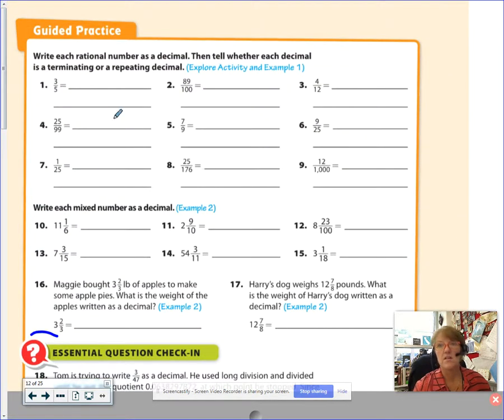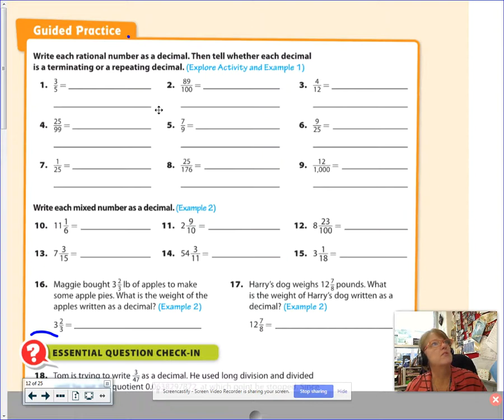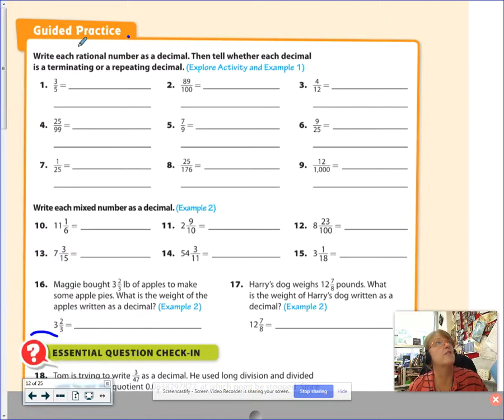Make sure that you are answering both parts of the instruction. It says, write each rational number as a decimal. Okay? And yesterday we said, all right, rational means you can write it as a fraction. So when you see rational, think fraction.